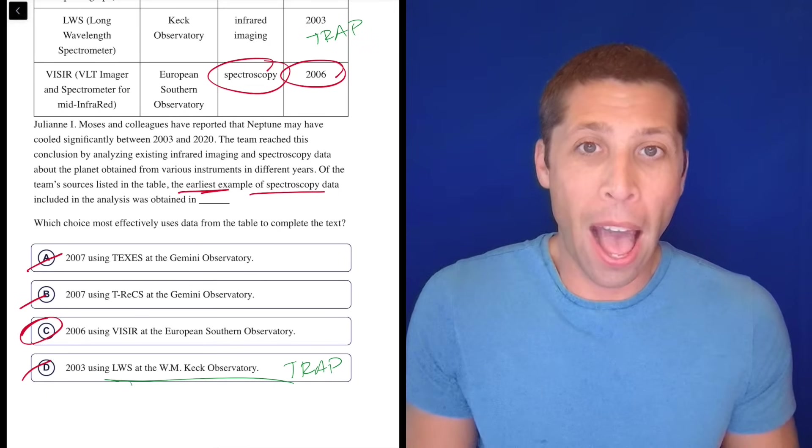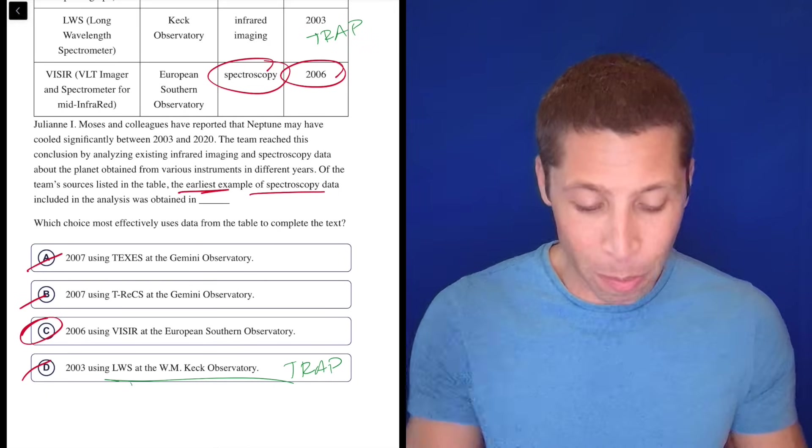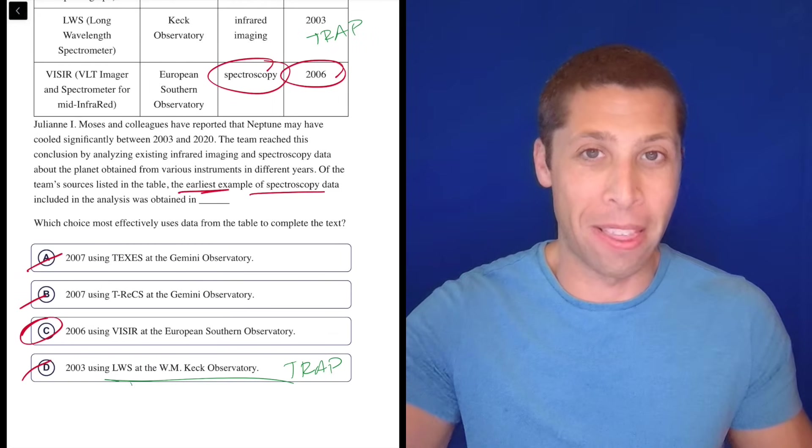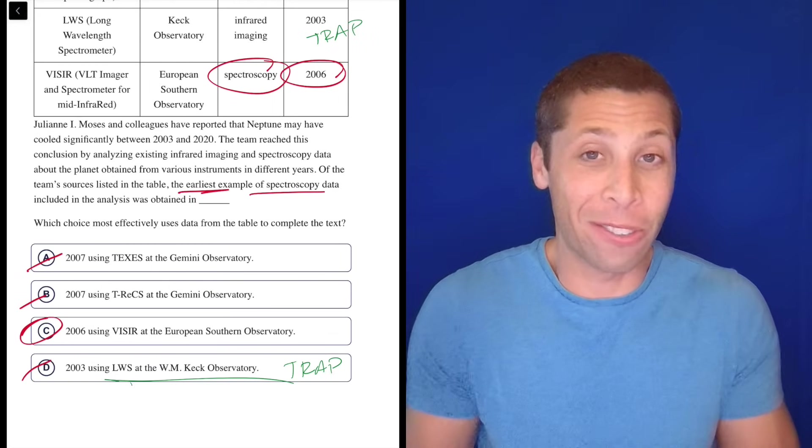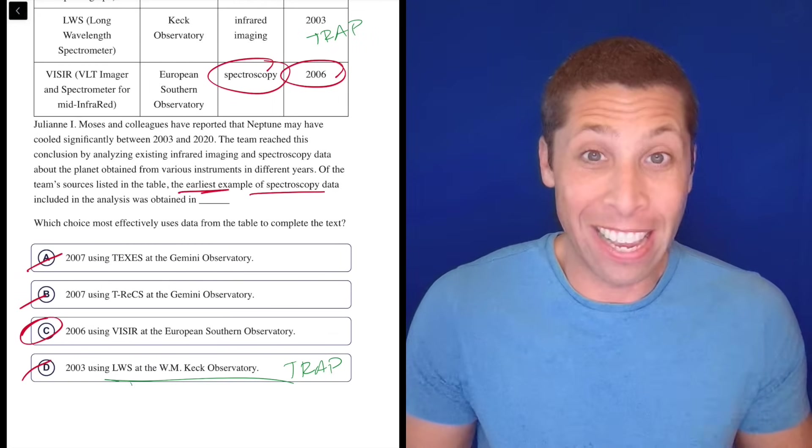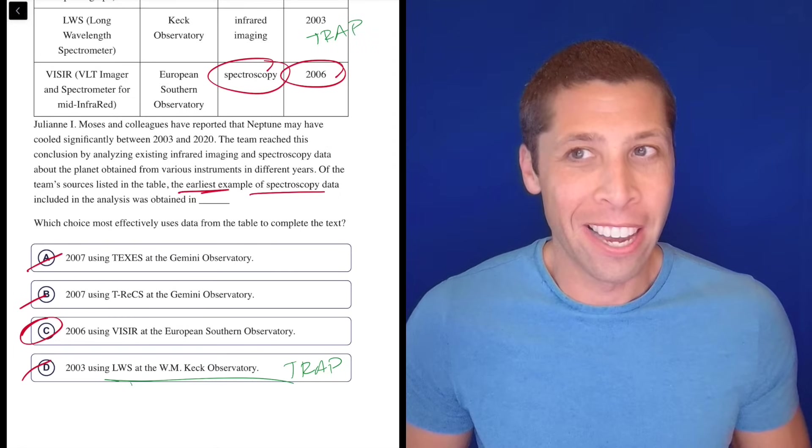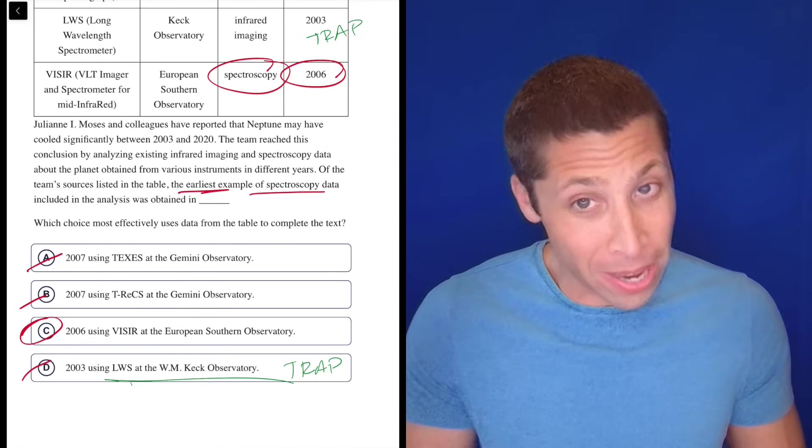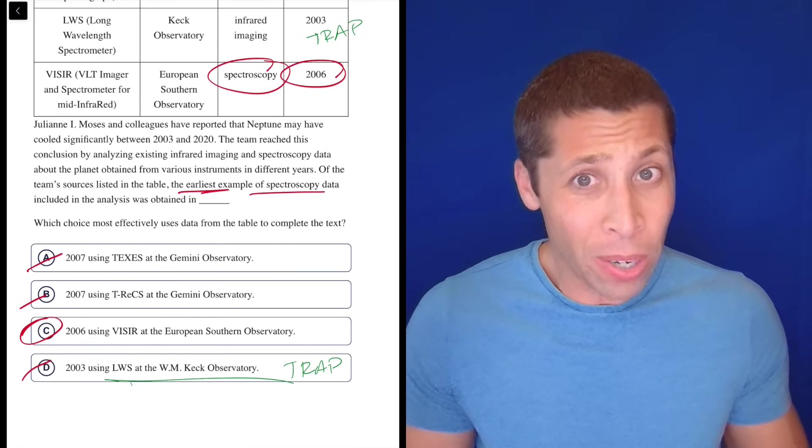I'm done. I don't actually think it makes it harder to specify that it needs to be the earliest spectroscopy thing. This is why reading instructions is mostly what the SAT tests. If you fell into that trap, if you pick D here, you just need to read carefully.